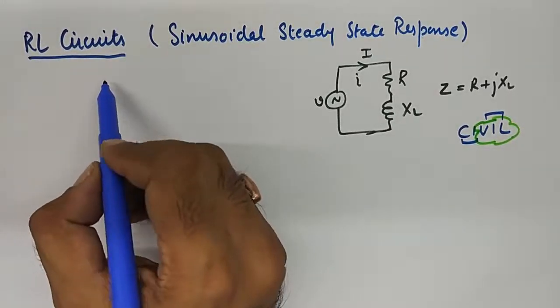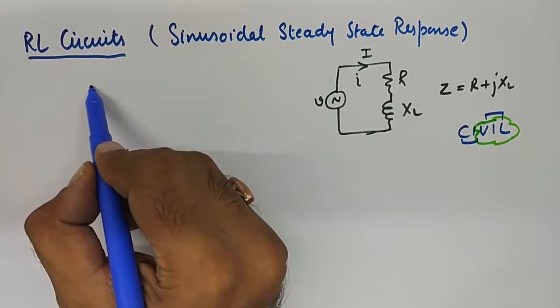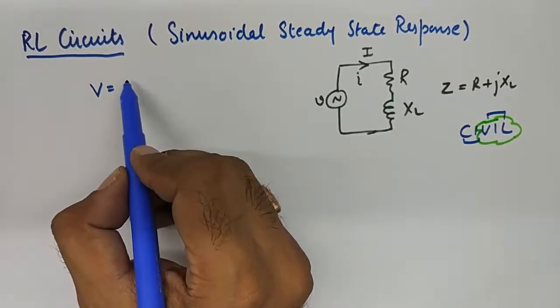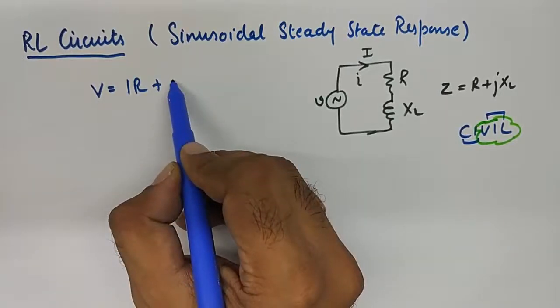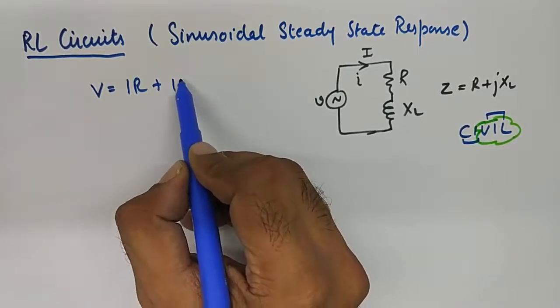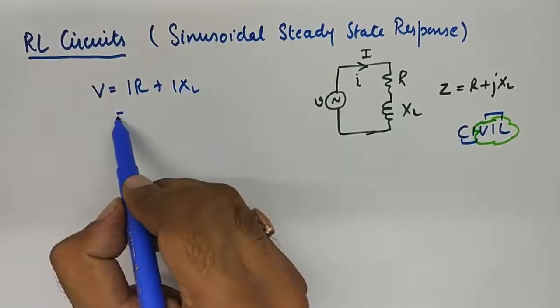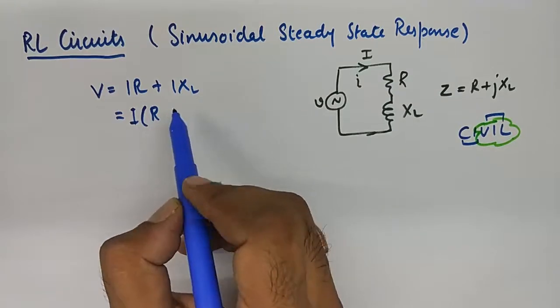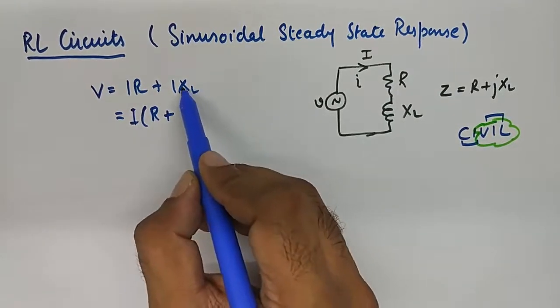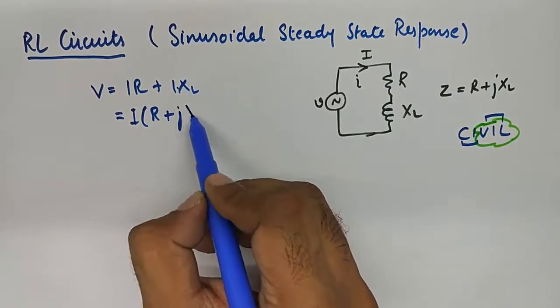Now we know that the voltage here can be represented as IR plus I into XL. So taking I common, we are left with R plus jXL.